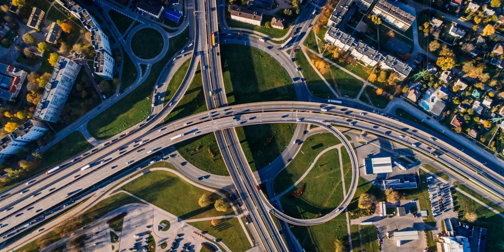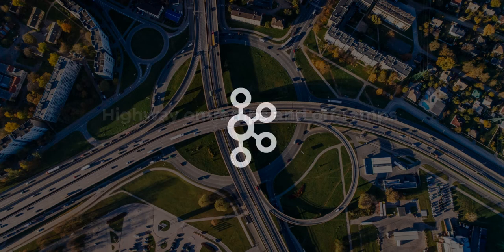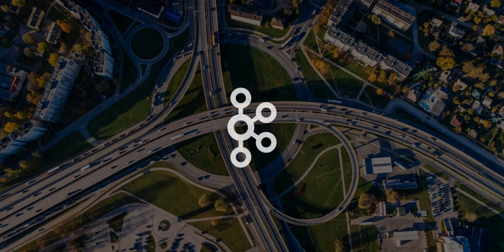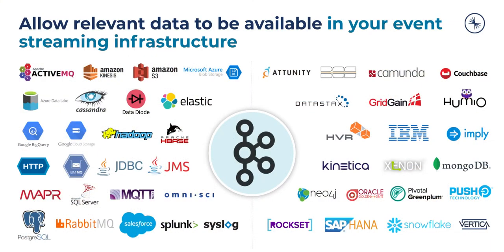Imagine a newly built interstate highway. What's the first thing you need to drive it? It's not a car — it's on-ramps and off-ramps. Otherwise, the highway is of limited use. If Kafka is that data highway, then you need a way to connect existing non-Kafka systems to Kafka so that relevant data from anywhere else in the business is available to your event streaming infrastructure.